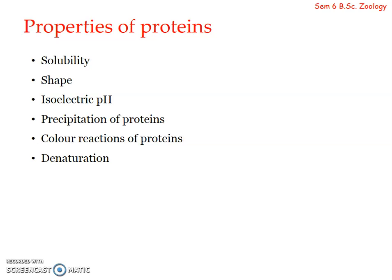Proteins exist in colloidal form due to hydration of polar groups, but proteins get precipitated by dehydration or neutralization of polar groups. Proteins show least solubility at the isoelectric pH, and certain proteins get easily precipitated when the pH is adjusted to the isoelectric pH range. Formation of curd from milk is an example of slow precipitation of milk protein, casein, at the isoelectric pH. This occurs due to lactic acid produced by fermentation of bacteria, which lowers the pH.